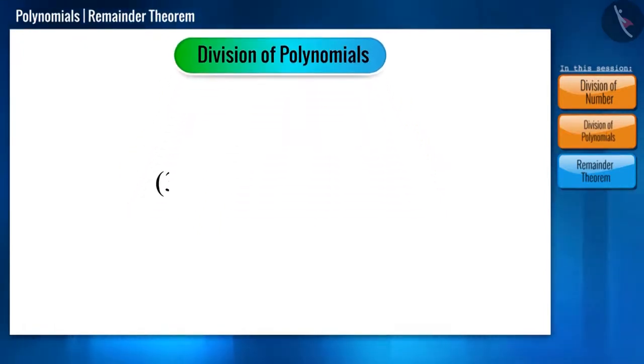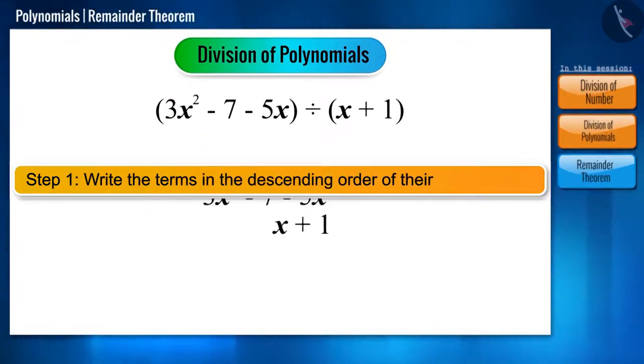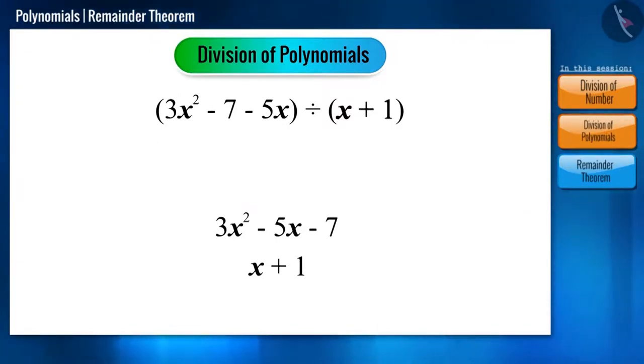Find the remainder obtained by dividing the polynomial 3x squared minus 7 minus 5x by x plus 1. Our first step is to arrange the terms in the polynomial in descending order of their power or degree, starting from the term with highest power to the constant term.